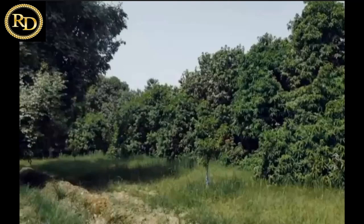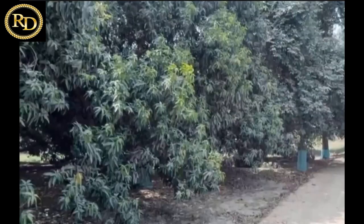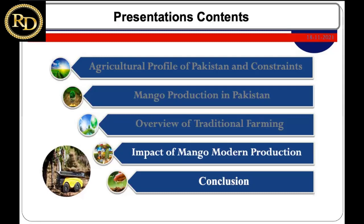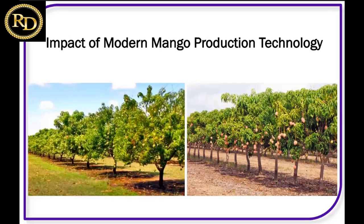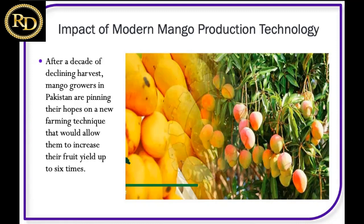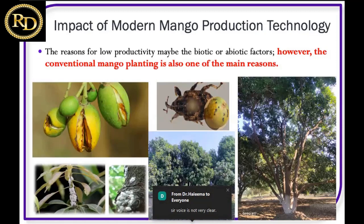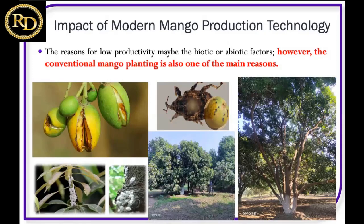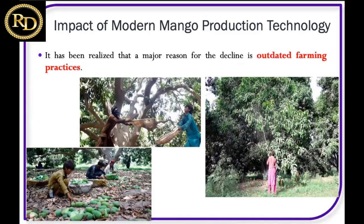After decades of declining harvest, mango growers in Pakistan are pinning their hopes on new farming techniques that would allow them to increase fruit quality and quantity by up to six times. Low productivity is caused by several biotic and abiotic factors, and conventional mango planting is one of the most important reasons. It has been realized that the major reasons for decline are outdated farming practices that are not modernized, and the traditional mango farming system continues to rely on them.